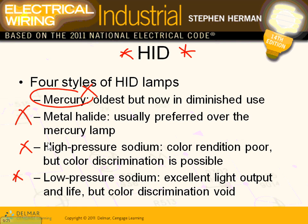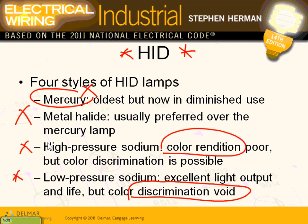The problem with low pressure sodium is that color discrimination is void — no color discrimination whatsoever. Metal halide and high pressure sodium, when treated, can give you good — not excellent, but good — color rendering. Why do I need color rendering? Because I need to be able to find my SUV, my red or black SUV, or whatever color you're looking for.